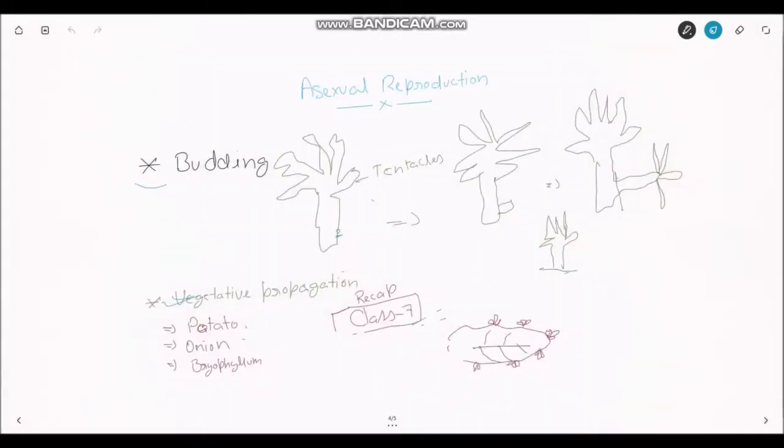Now we will go on to budding. What happens in budding? After getting more matured, the bud also gets matured and then it gets divided from the parent body part and makes a stable new organism.